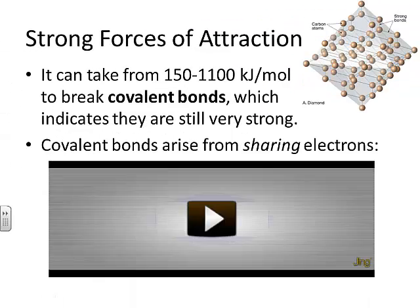Moving to covalent bonds, it can take from 150 to 1,100 kilojoules per mole to break the bonds of a covalently bonded substance. That indicates they are still very strong, though overall they are not considered necessarily as strong as ionic bonds. Recall that covalent bonding arises from sharing electrons.